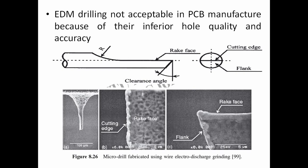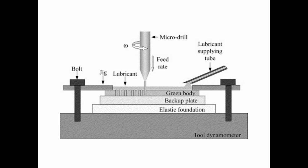The first figure shows the microdrill with its features like rake face, clearance angle, cutting edge, and flank face. The second figure shows a microdrill fabricated using wire electro-discharge grinding. The workpiece or green body is rigidly located by using special jigs. A backup plate is used to allow overrun for the drill bit. An elastic foundation gives a cushioning effect and absorbs shockwaves that may reflect back to the microdrill. Lubrication oil is supplied by an auxiliary tube.